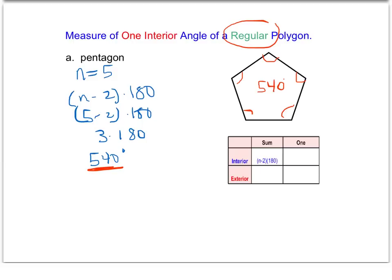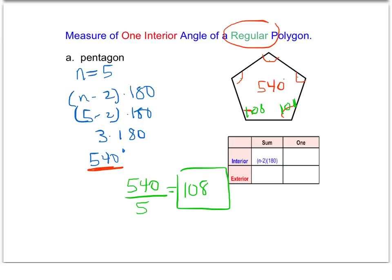If we want to find only one of those angles, we can just take the sum of the angles, 540, and divide by 5. 540 divided by 5 is 108, and that means that each of these interior angles is 108 degrees. That's our answer for one interior angle of a regular pentagon.